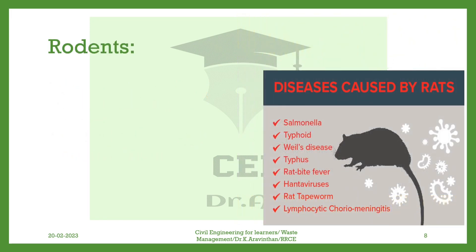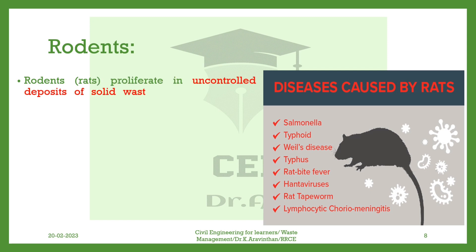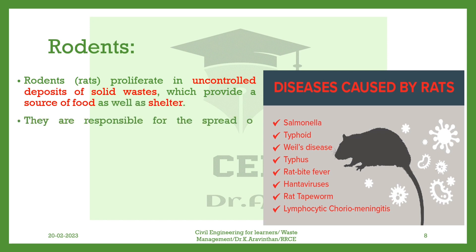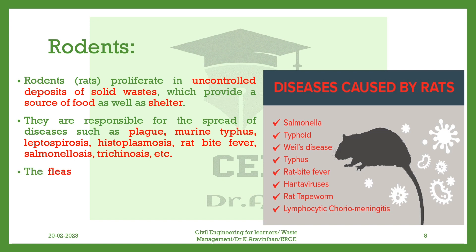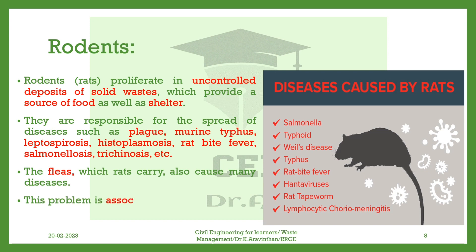Rodents. Rats proliferate in uncontrolled deposits of solid wastes, which provide a source of food as well as shelter. They are responsible for the spread of diseases such as plague, murine typhus, leptospirosis, histoplasmosis, rat bite fever, salmonellosis, trichinosis, etc. The fleas which rats carry also cause many diseases. This problem is associated not only with open dumping and poor sanitation.